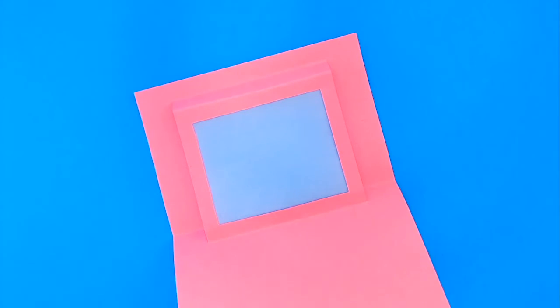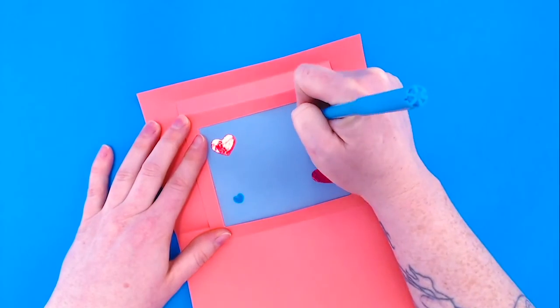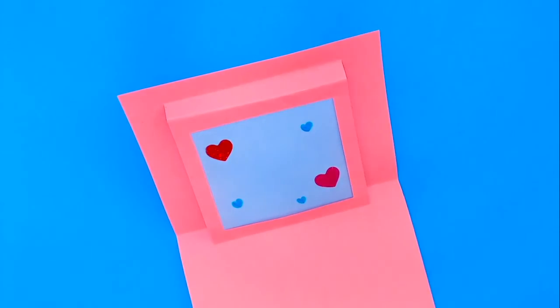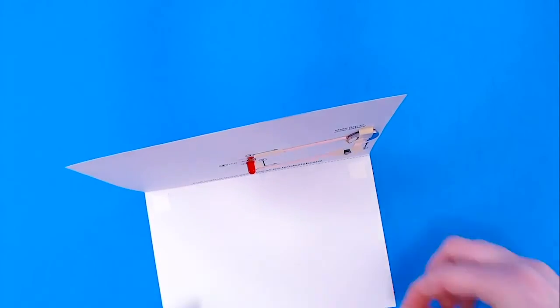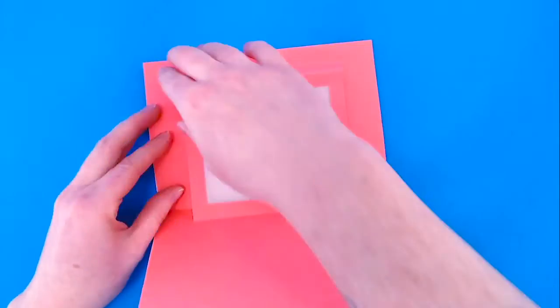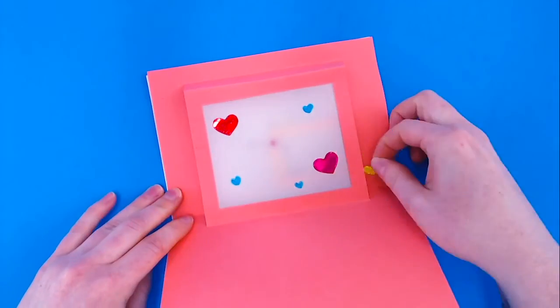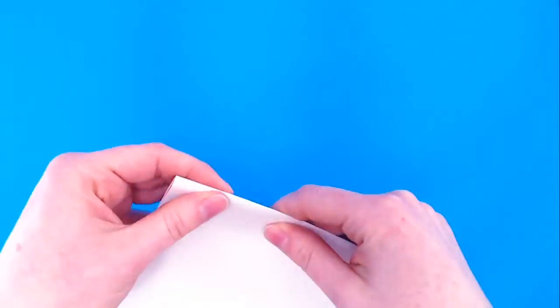The final step is to decorate the card. I'm going to use some stickers and some markers to decorate mine. This card can be customized for any holiday or occasion. To attach the card to the circuit template, you can use some double-sided tape or some glue. I also like to put a sticker or a note showing where to push on the card since the button is hidden by the pop-up layer.